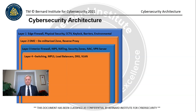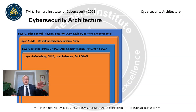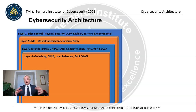Layer 4 is switching, including MPLS, load balancers, DNS, and VLAN. These are the more hardcore infrastructure devices that help direct data packets within the organization. Load balancers prevent one network from becoming saturated with traffic, improving performance. VLANs are virtual logical networks that allow more segmentation. DNS provides names connected to IP addresses for internal use, and we don't share these with the external world.